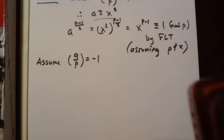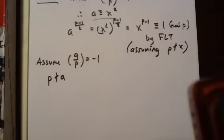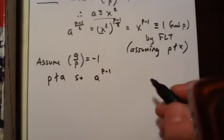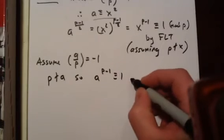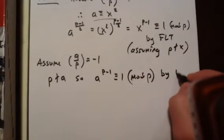So again, we have that P does not divide A. So A to the P minus 1 is congruent to 1 mod P by Fermat's Little Theorem.